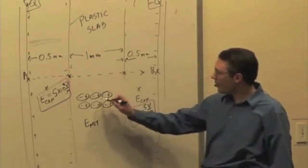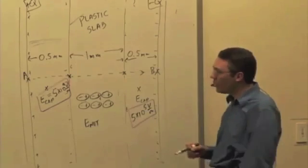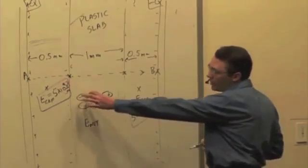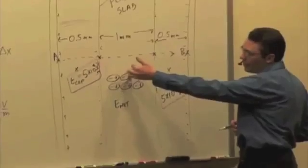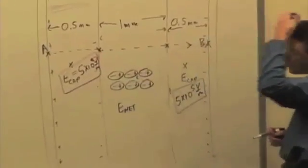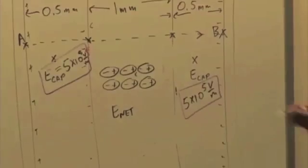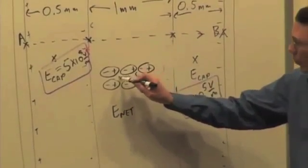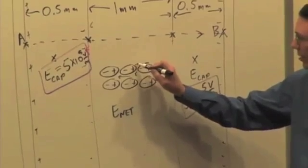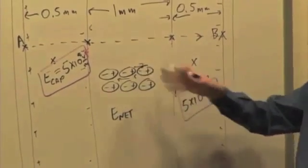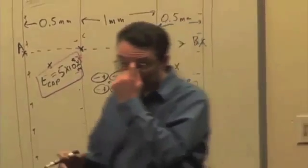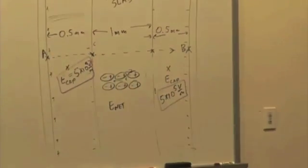And at any particular point, well, it might be hard to say what E net is doing because you've got all these polarized molecules in here, and depending on where exactly your observation location is, you could have the net electric field pointing one way at one location or a completely different way at another location, depending on where you are. So it's a little bit messy, and it's hard to figure out.